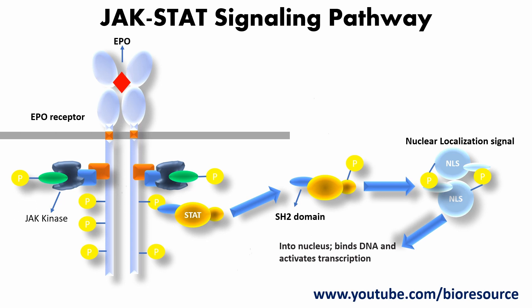Following binding of the ligand to the cytokine receptor and activation of the associated JAK kinase, the JAK phosphorylates several tyrosine residues in the receptor cytosolic domain. An inactive monomeric STAT transcription factor binds to the phosphotyrosine in the receptor and is then phosphorylated by the active JAK. The phosphorylated STATs spontaneously dissociate from the receptor and dimerize, because the STAT homodimer has two phosphotyrosine–SH2 domain interactions whereas the receptor-STAT complex is stabilized by only one. The phosphorylated STATs tend not to rebind to the receptor. The STAT dimer, which has two exposed nuclear localization signals, moves into the nucleus where it binds to promoter sequences and activates transcription of target genes.